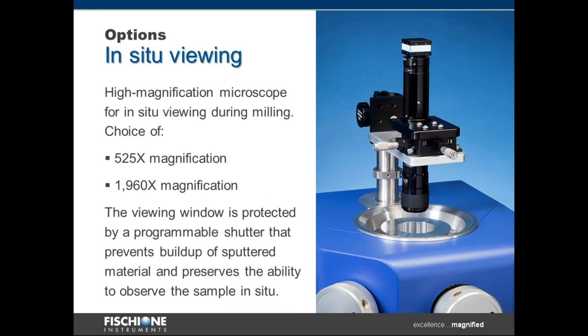Additional options include in-situ viewing with high magnification capabilities, and there's a choice of one of two microscopes, either 525X or 1960X. Located directly beneath the viewing window is a shutter that can be programmed that prevents the buildup of sputtered material and preserves the ability to observe the sample in-situ for prolonged periods of time.